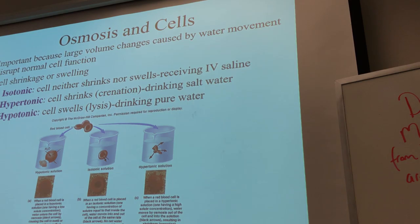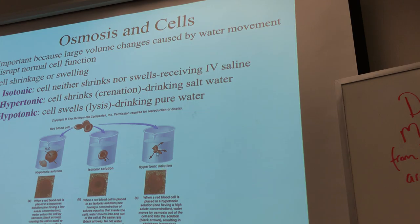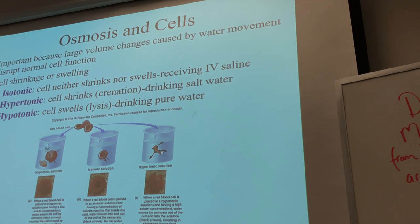Just as bad as drinking pure water is drinking seawater. Seawater has even more solutes than found in your cells. When you drink seawater, there are more solutes than what's found in the red blood cell. The water in your red blood cells wants to leak out, drawn by the higher solute concentration in seawater. The red blood cell starts to shrink, shrivel, and die — we call this crenation. That's a cell shrinking until it can't maintain its border and dies.